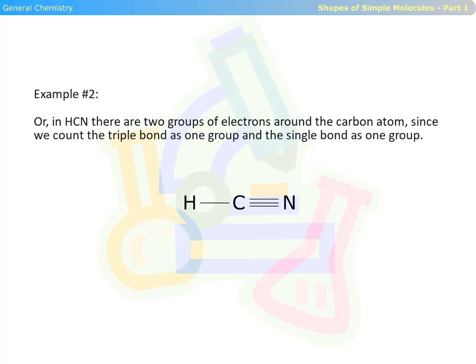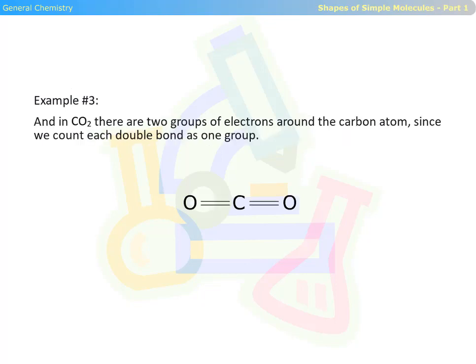In hydrogen cyanide, there are two groups of electrons around the carbon atom, since we count the triple bond as one group and the single bond as one group. In carbon dioxide, there are also two groups of electrons around the carbon atom, since we count each double bond as one group.